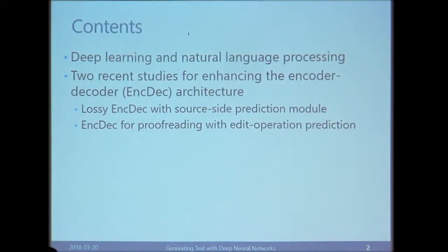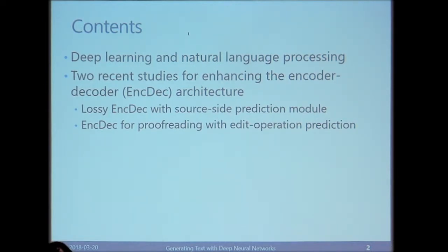This is the outline of my presentation. I will briefly explain how deep learning was applied to natural language processing. After reviewing the Encoder-Decoder architecture, I will explain two recent studies for enhancing it. The first topic is about improving headline generation by considering a lossy Encoder-Decoder model with a source-side prediction module. The second topic is about applying the Encoder-Decoder model for proofread sentence generation with edit operation prediction.